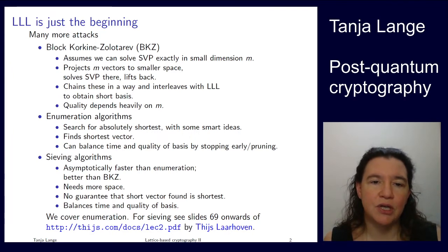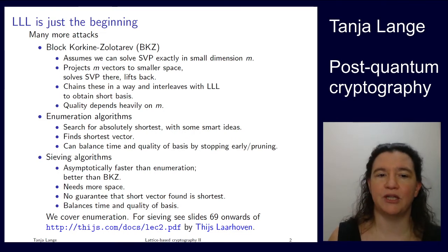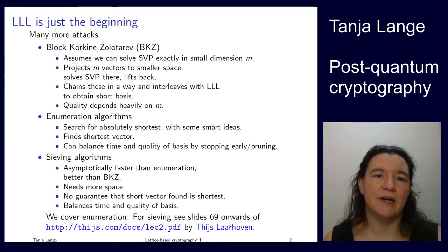Enumeration is something which in practice runs pretty well. It's exponential time, kind of obviously, and it does find the shortest vector. We have some balance of time and quality, and I'm going to show you one example of what this pruning actually means. Let's jump right in.